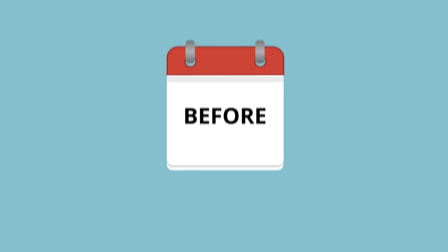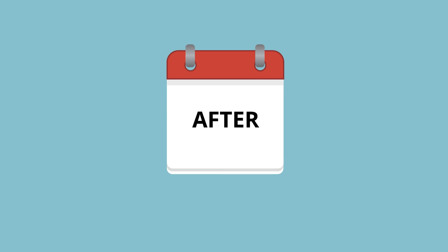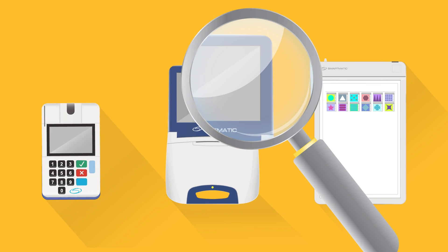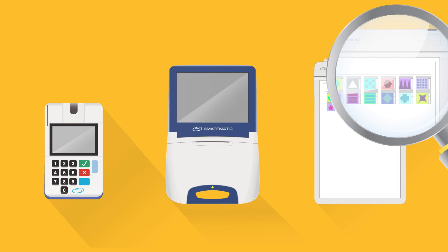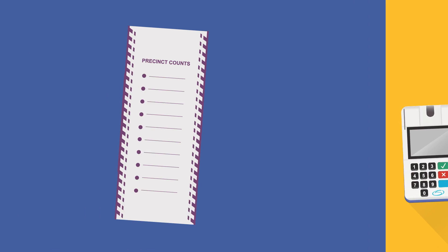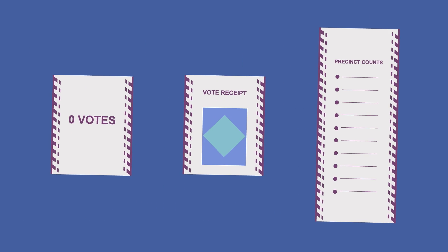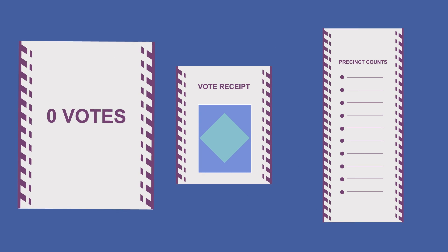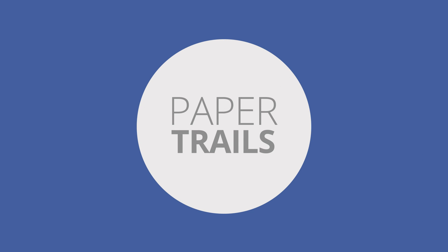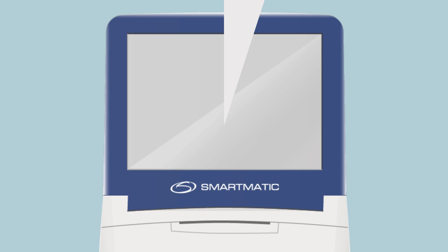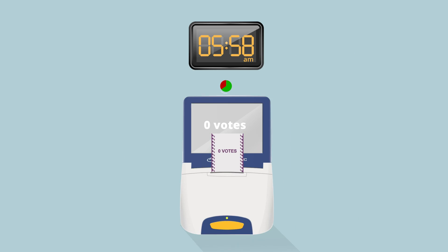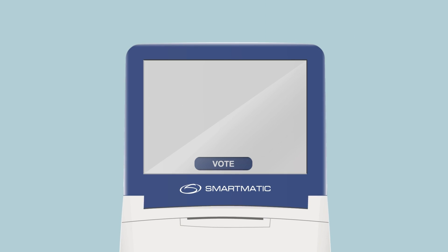Before, during, and after the voting process, thirteen audits take place to validate the performance of all system components, including an exhaustive source code review overseen by technicians from all political parties. To begin, a zero vote count is printed, certifying that there are no votes stored in the machines.